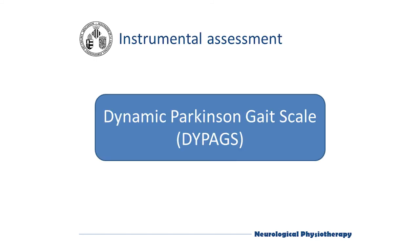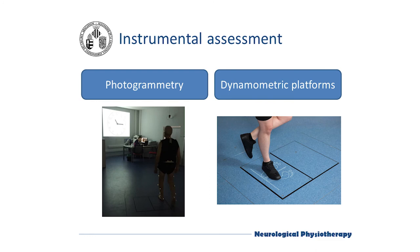If we want to assess gait objectively or conduct a study, we can use instrumented assessments. Photogrammetry analyzes through frames the position of the segments that participate in gait. Dynamometric platforms allow us to study the reaction force of the ground and its vertical, mediolateral, and anteroposterior components, as well as the position of the pressure center in the X and Y axes.